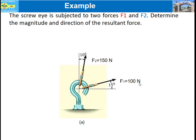Hello everyone. In this video I'm going to show you how to determine the magnitude and the direction of a resultant vector using the parallelogram law. The question is: a screw is subjected to two forces F1 and F2 — determine the magnitude and the direction of the resultant force.